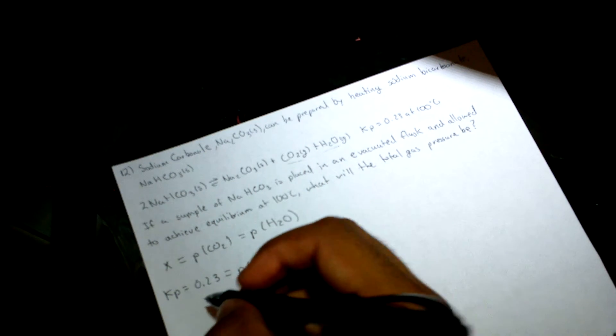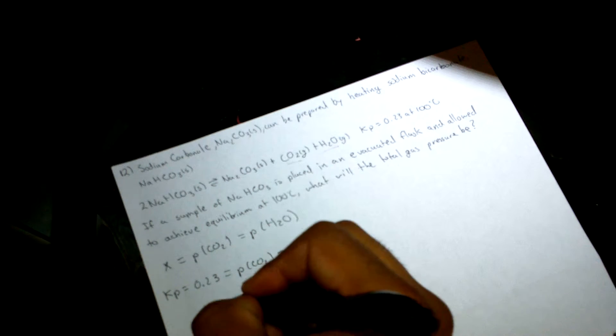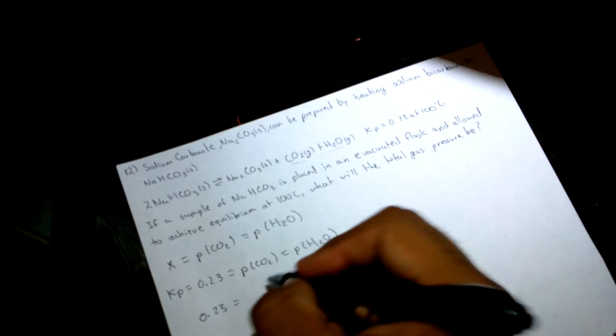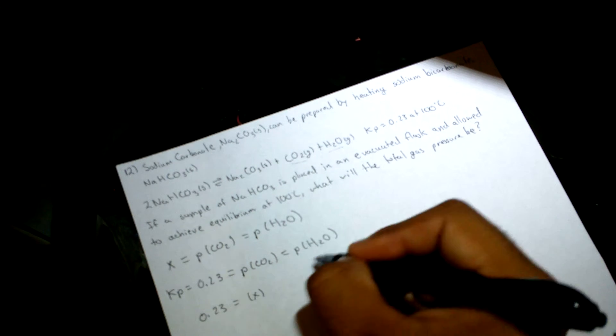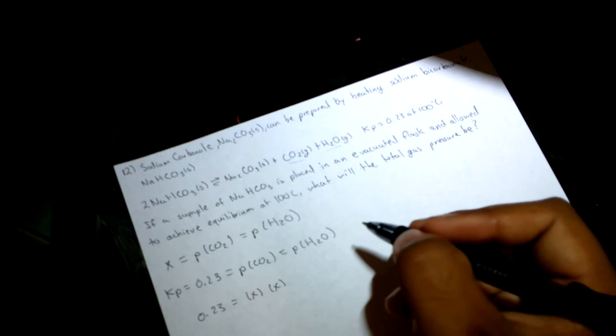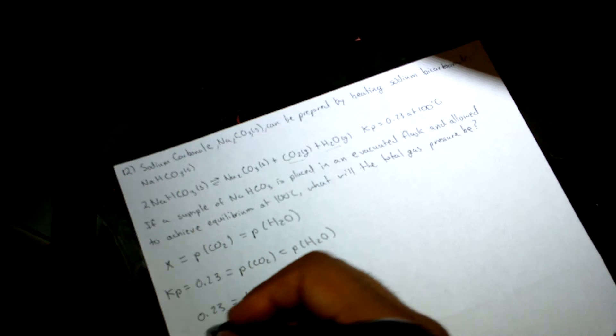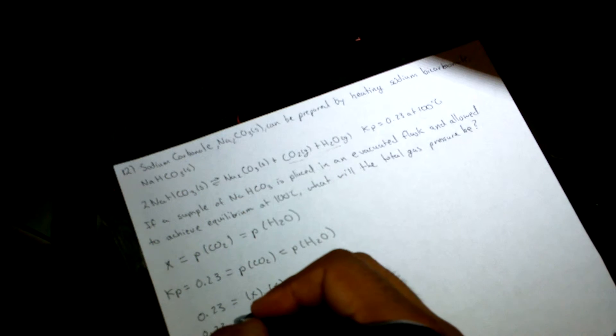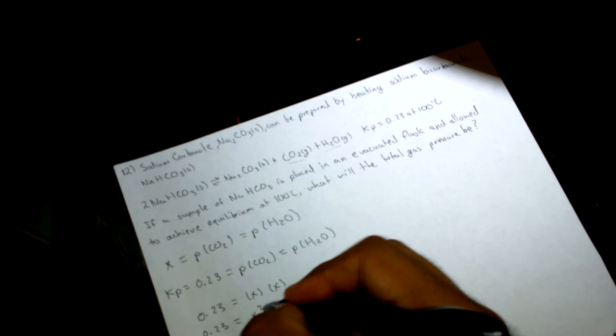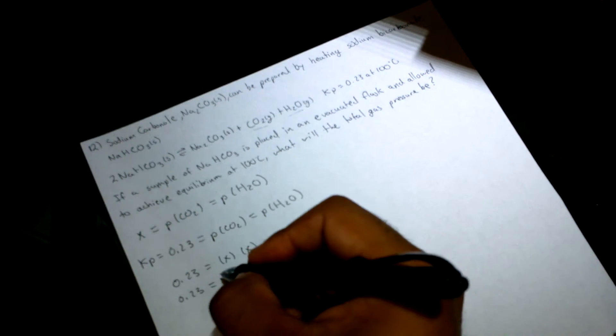From here we can conclude that 0.23 equals x times x, so 0.23 equals x squared. We're solving for x by getting the square root of both sides.